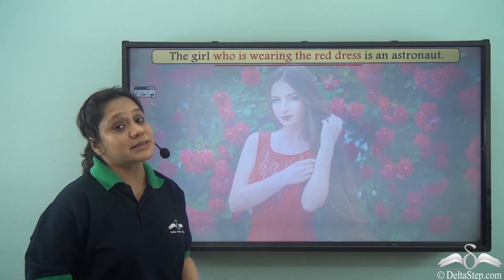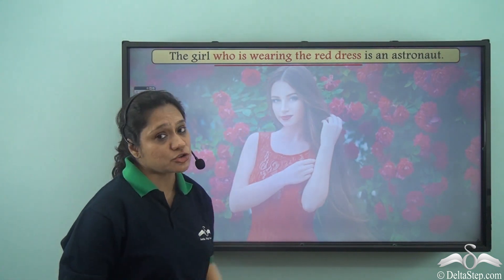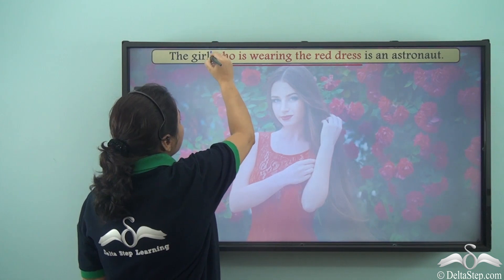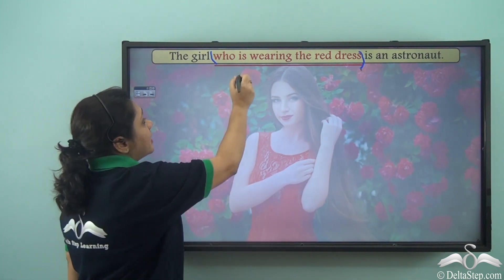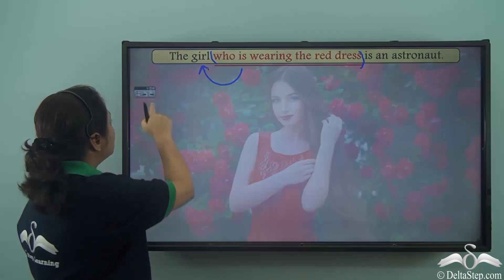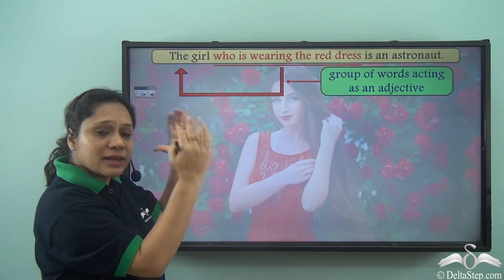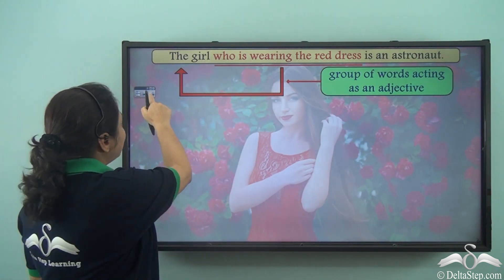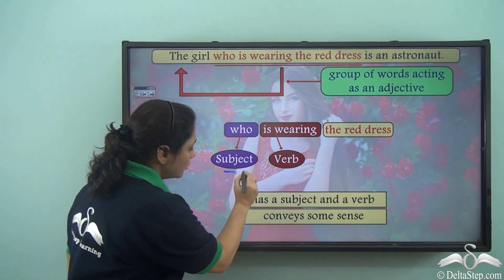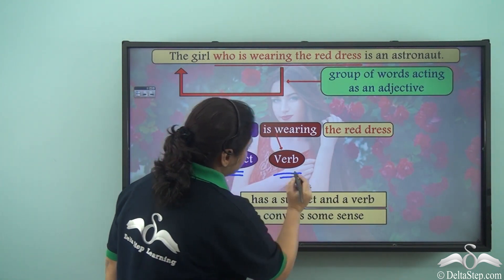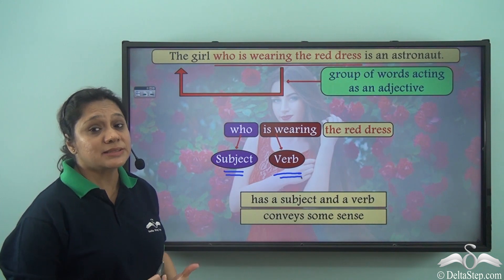Now if you read this sentence carefully — 'The girl who is wearing the red dress is an astronaut' — what you will find is that 'who is wearing the red dress' is a group of words which is describing the girl. So this group of words is acting like an adjective. Now let us look at this group of words 'who is wearing the red dress' separately. It has a subject 'who' and has a verb 'is wearing'.